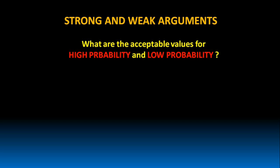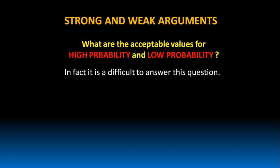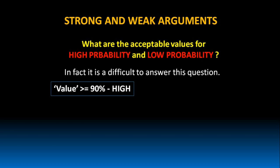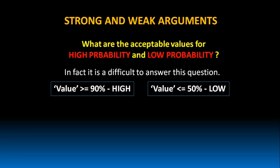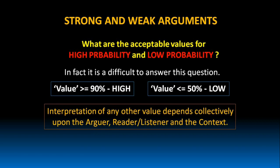But what are the acceptable values for high probability and low probability? In fact, it is a very difficult question to answer. But a value greater than or equal to 90% can be treated as high probability, and a value less than or equal to 50% can be treated as low probability. Interpretation of any other value depends collectively upon the arguer, reader or listener and the context.